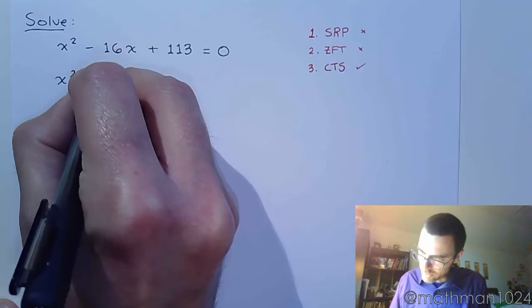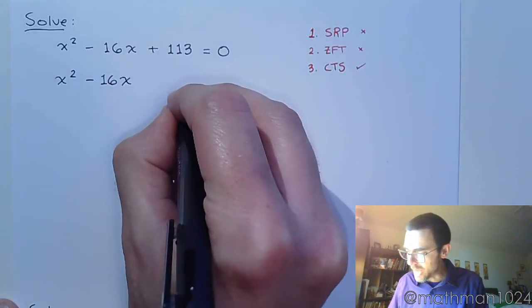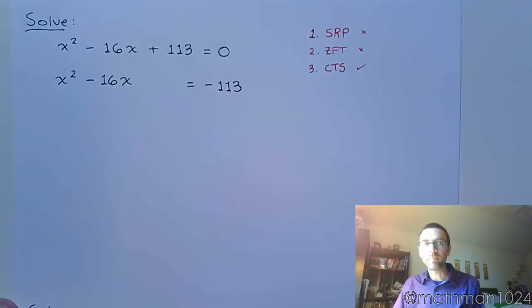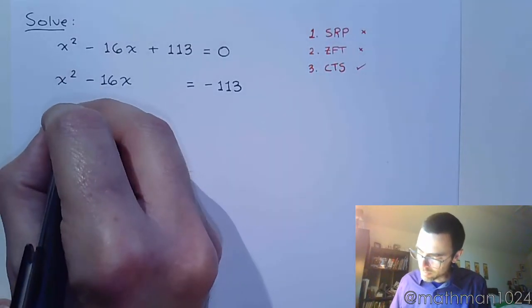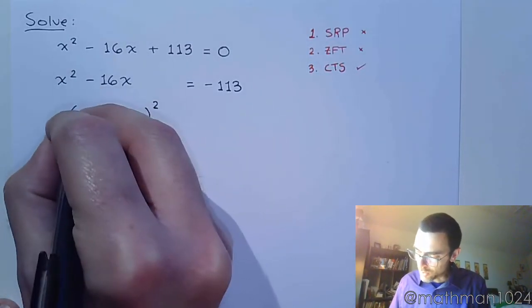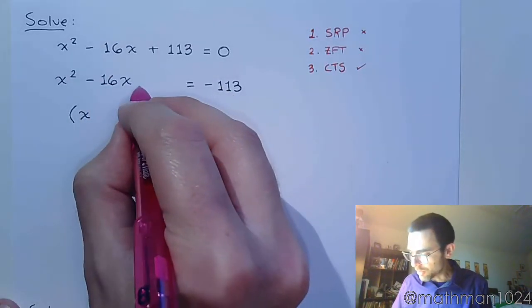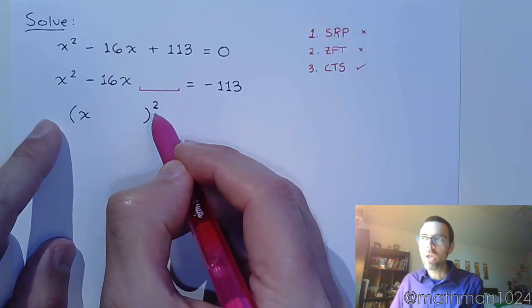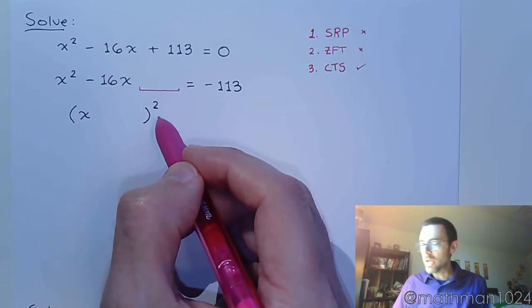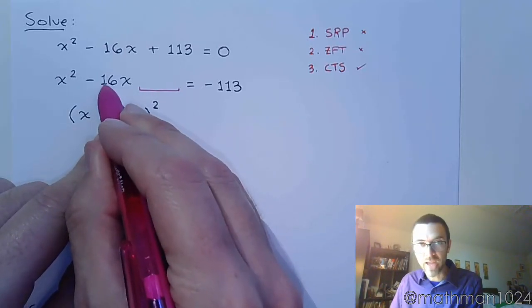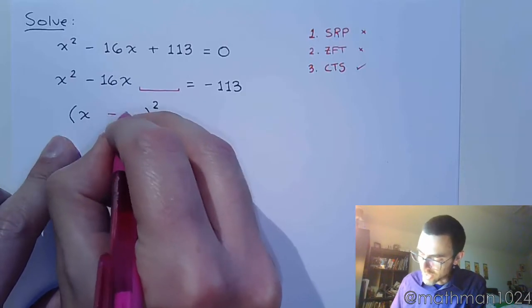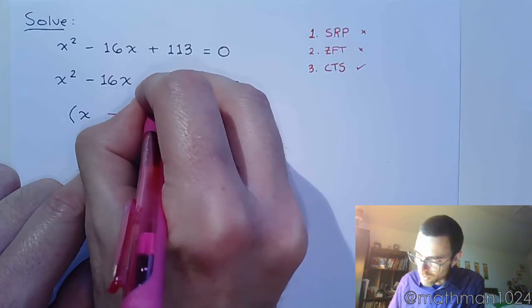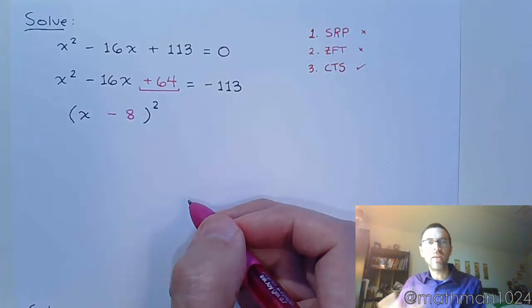We complete the square by leaving a gap and moving that constant term to the other side of the equation, like that. And with completing the square, we understand that we're supposed to put a number in this gap right here so that we have a polynomial that factors as a square. But here, we know what it's going to be, and we can kind of force the hand, because what goes in here is half of that coefficient. So, half of negative 16 is negative 8, and it's negative 8 squared, positive 64, that goes in that gap.